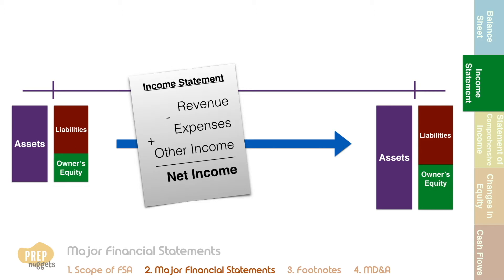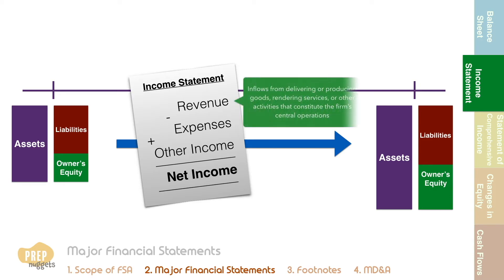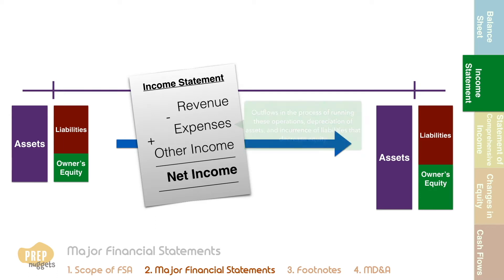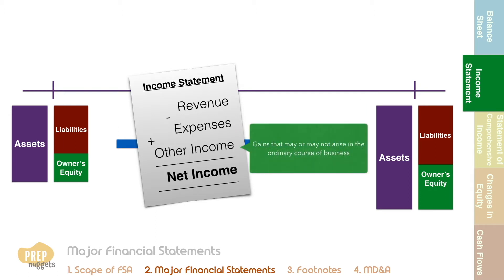Net income is basically revenue minus expenses plus other income. Revenues are inflows from delivering or producing goods, rendering services, or other activities that constitute the firm's central operations. Expenses are outflows in the process of running these operations, depreciation of assets, and incurrence of liabilities that decrease equity. Other income includes gains that may or may not arise in the ordinary course of business.